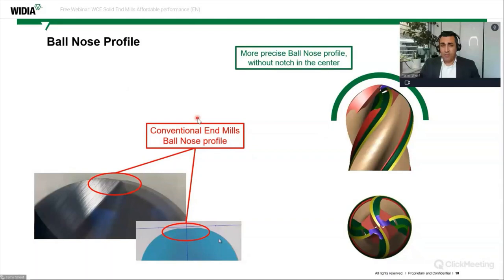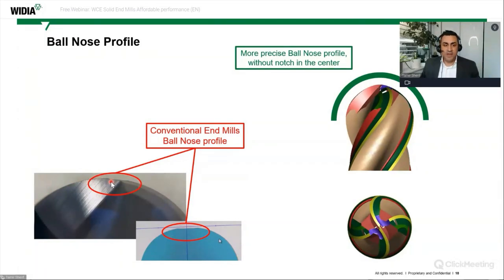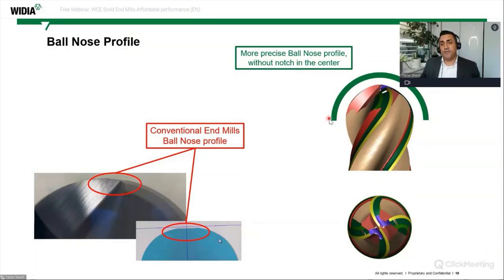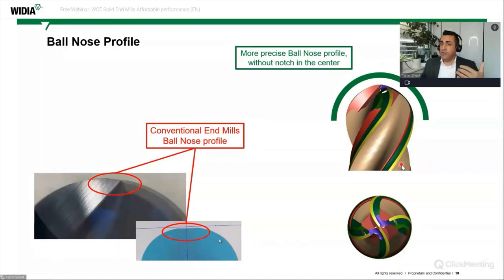About the ball nose profile and the one-pass relief: on a conventional end mill ball nose, the grinding process creates a notch at the center. With the new ball nose profile, we produce a truly perfect full-round ball nose profile at the top — a more precise profile without a notch in the center, as shown in the graphic. This is new technology and a clear differentiation from many other solid end mills.